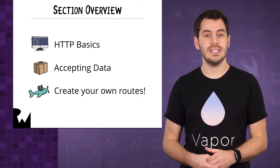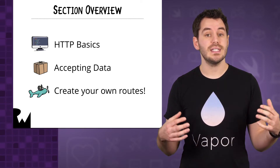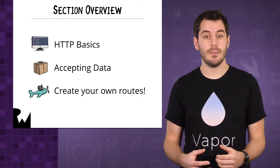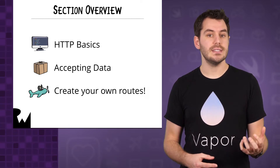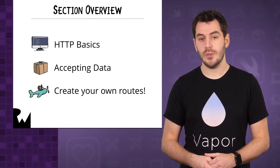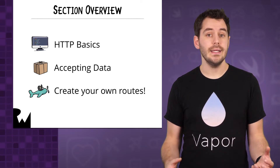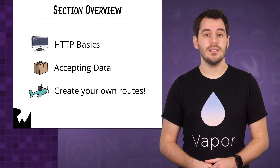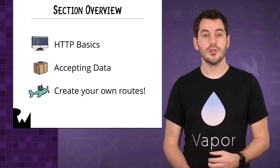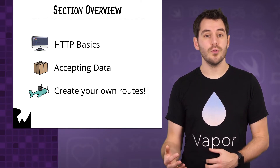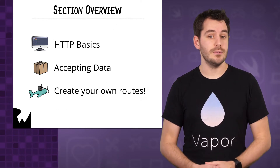We'll then look at how to accept data from requests, such as sending JSON to our application, and see how easy it is to use with Swift 4 and Codable. Finally you'll be set a challenge to put into practice everything you have learnt in the section to create some of your own routes. It will really be that simple.